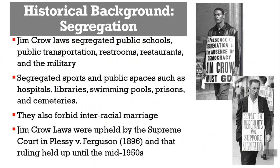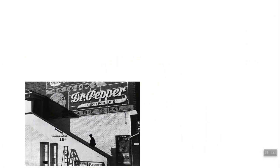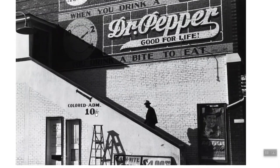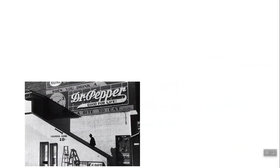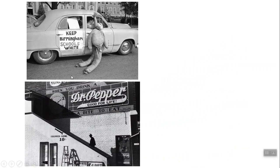There were segregated entrances for people of color at restaurants — a separate alleyway entrance where they had to pay 10 cents and then sit separately. Signs like 'Keep Birmingham schools white' were common. There was also violence: people who were killed for trying to fight for their rights — Martin Luther King Jr. and others trying to vote and exercise their freedom.